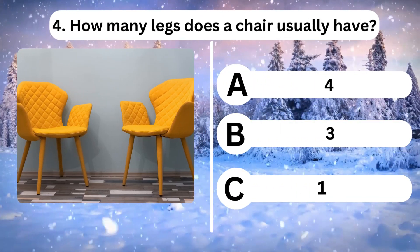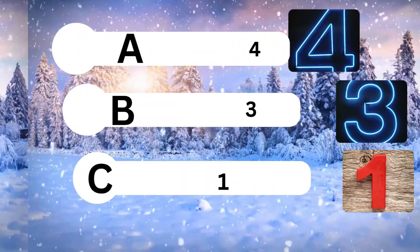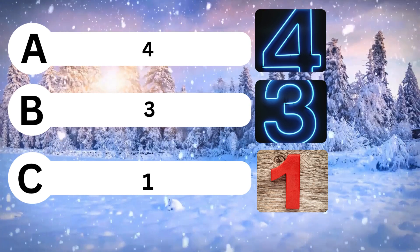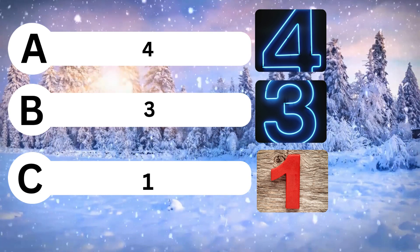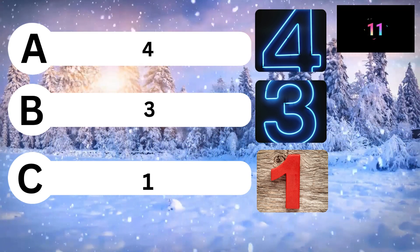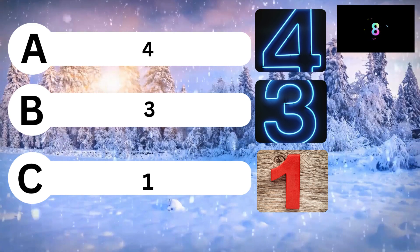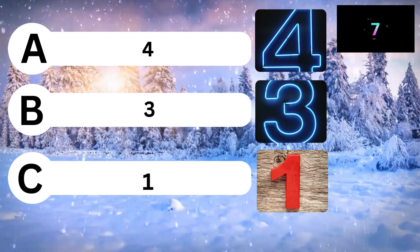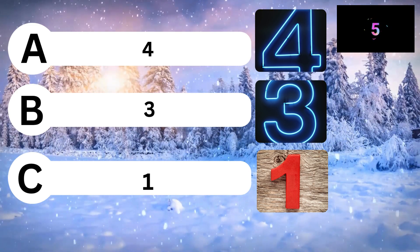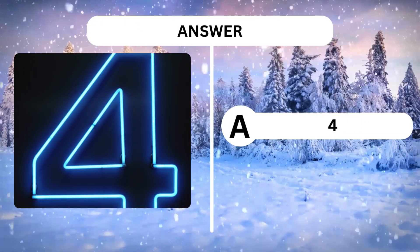Question 4. How many legs does a chair usually have? A. 4. B. 3. C. 1. Answer is A. 4.